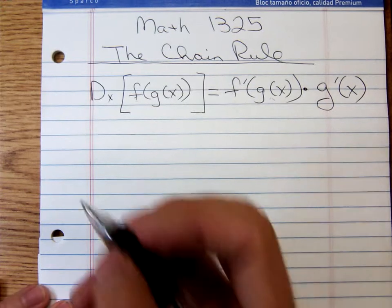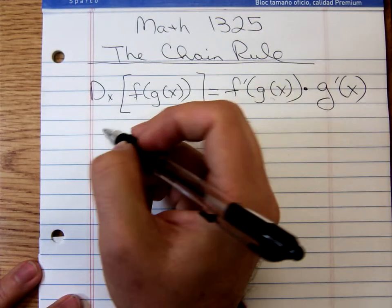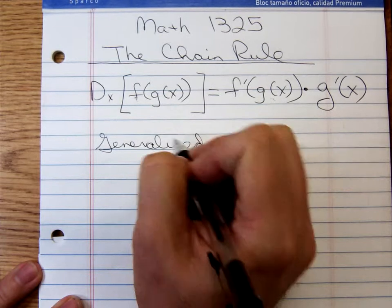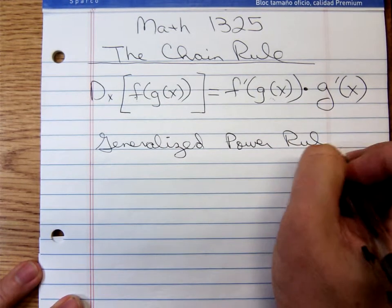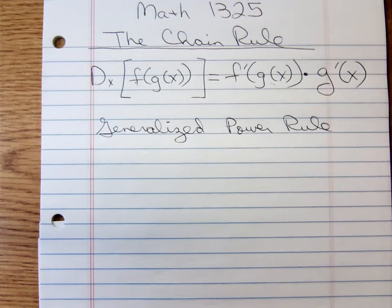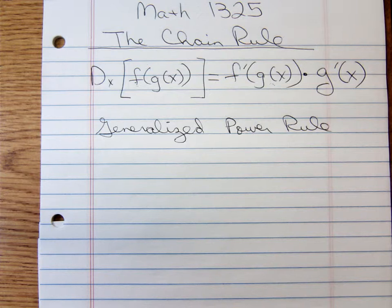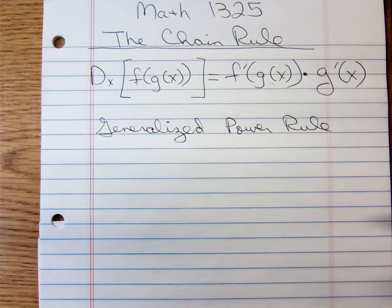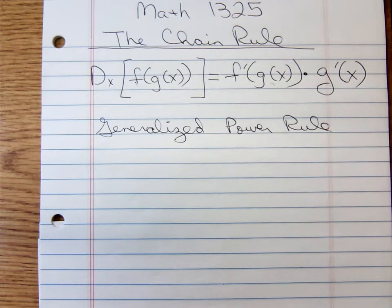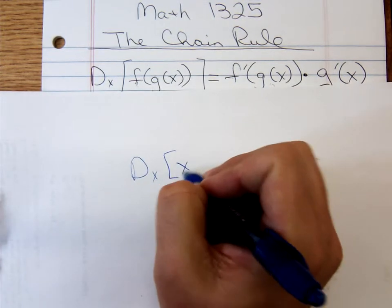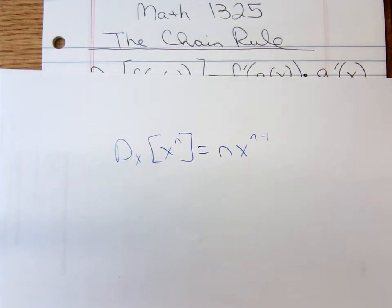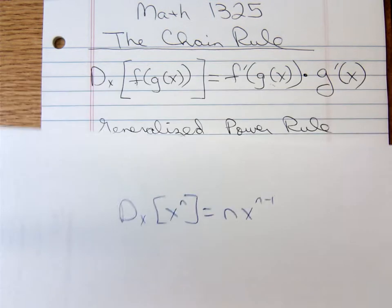A specific case of the chain rule — primarily what you'll be using in your homework — is the generalized power rule. The power rule says that if you have x to the n power, you differentiate by bringing down the exponent and subtracting 1. You've been using that power rule since we started differentiating; it's the primary rule we've had.